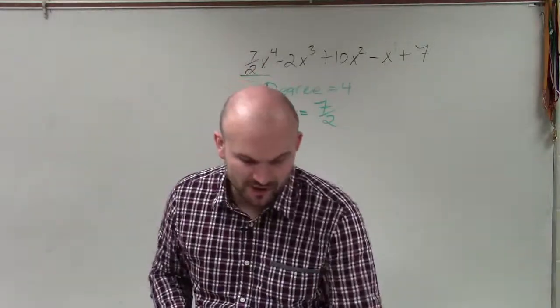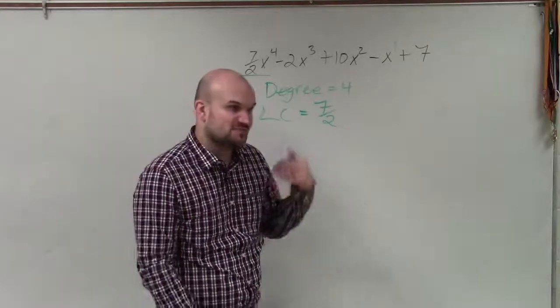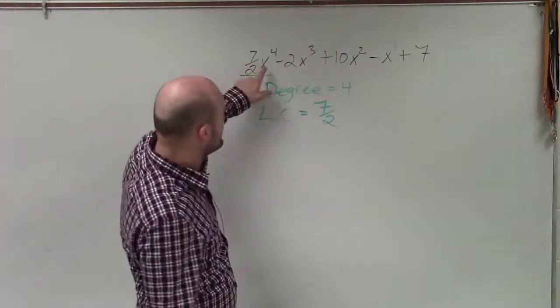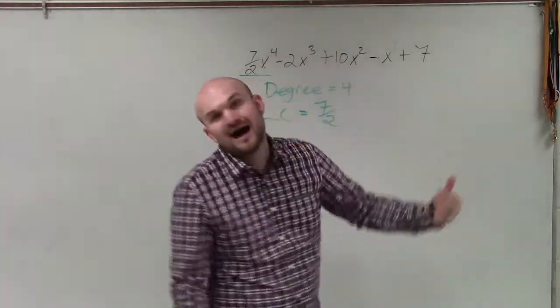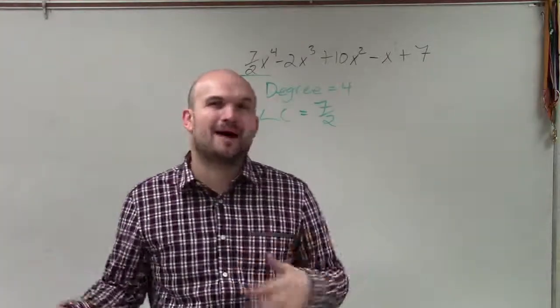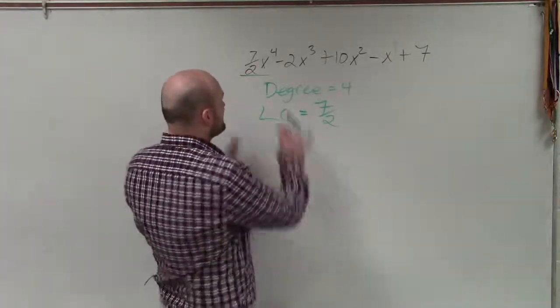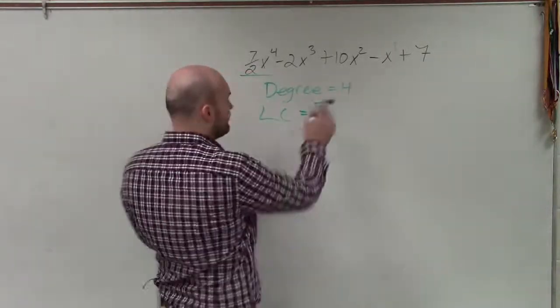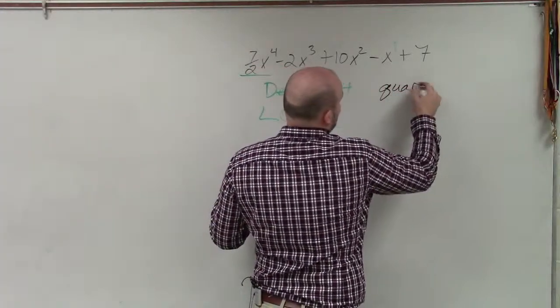In classifying, we can classify our polynomials by the number of terms as well as the degree. The number of terms, there's 1, 2, 3, 4, 5. So basically we would say a polynomial with five terms. However, since this is a polynomial that has a degree of 4, we can also classify it as a quartic.